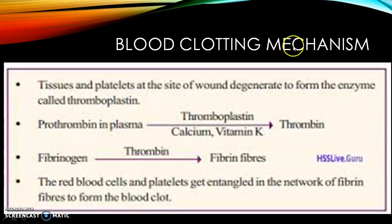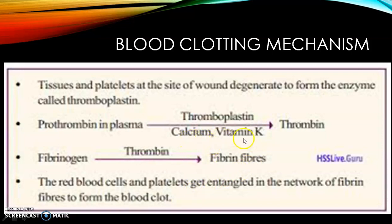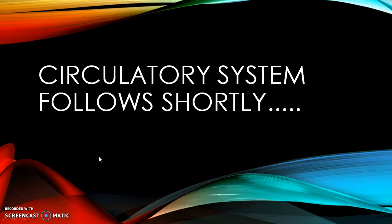In the blood clotting mechanism, when wounding occurs, tissues and platelets at the site of the wound degenerate and form the enzyme thromboplastin. In the presence of thromboplastin, prothrombin is converted into thrombin. Thrombin then converts fibrinogen into fibrin, forming the clot. There are 13 clotting factors, and in the presence of calcium and vitamin K, blood clots. Blood coagulation is a cascade process requiring many tissue factors and calcium ions. In the next session we will cover the circulatory system in detail.